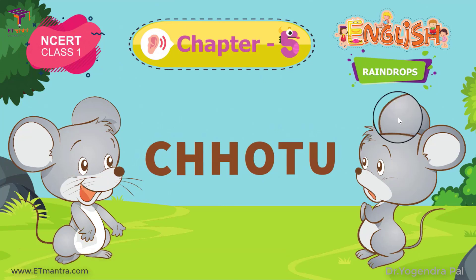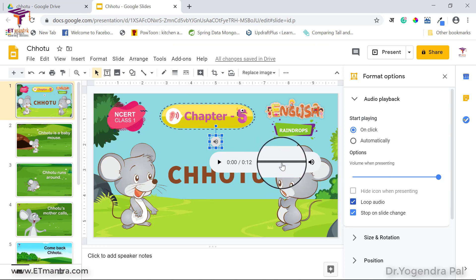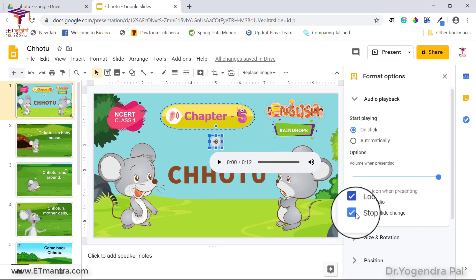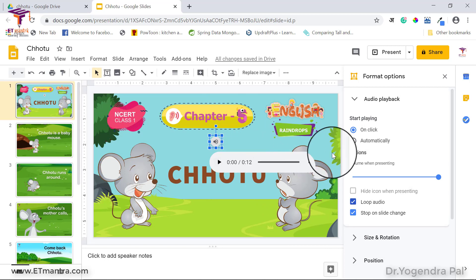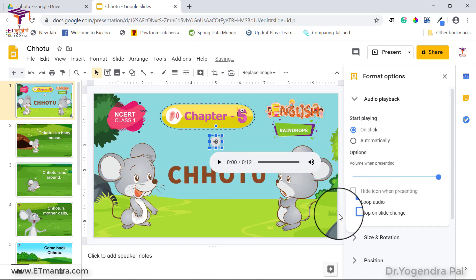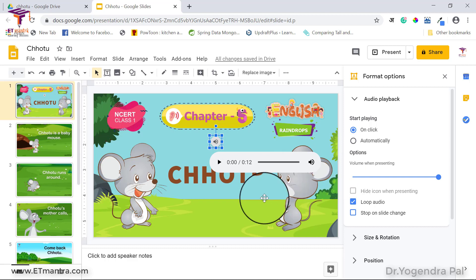If you select the Loop Audio option, after the audio finishes playing it will start again from the beginning. The Stop on Slide Change option means that when you navigate to another slide, the audio on the current slide will stop. If you don't enable this, the audio will keep playing even after you move to the next slide.